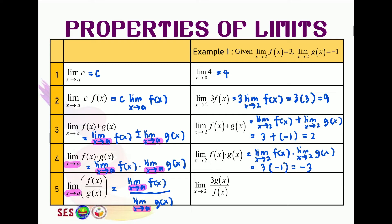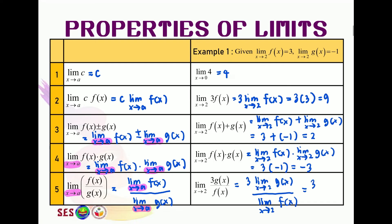In the last example, this one uses more than one property because we have a constant. From property 2, we can factorize the constant out and separate the division. So this becomes: 3 times limit x approaching 2 of gx, divided by limit x approaching 2 of fx. The value for limit gx equals negative 1 and the value for limit fx equals 3. So the final answer for this one is negative 1.